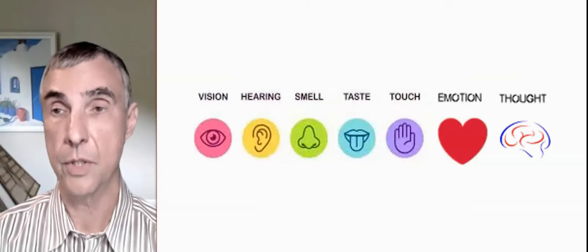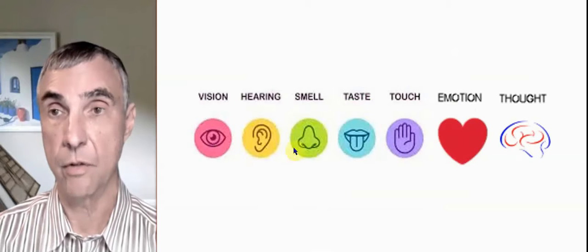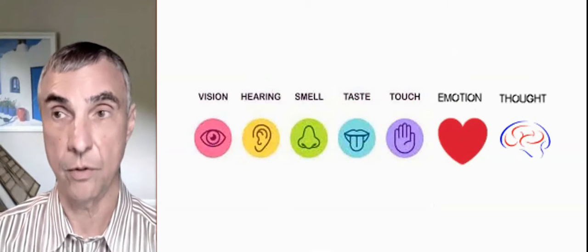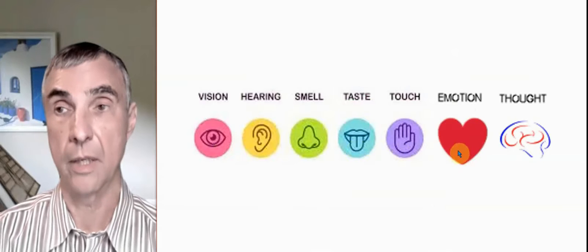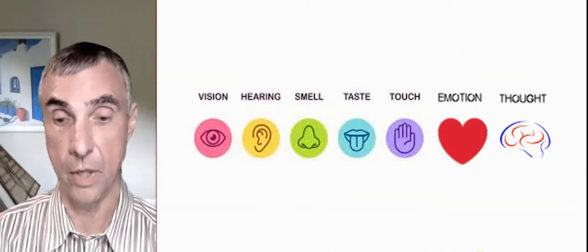And so it could be said that we have not five senses, but seven senses. We have vision, hearing, smell, taste and touch, which is how we experience the physical world. We have an eye of the heart, which experiences emotion. And we have an eye of the mind, which experiences thought.